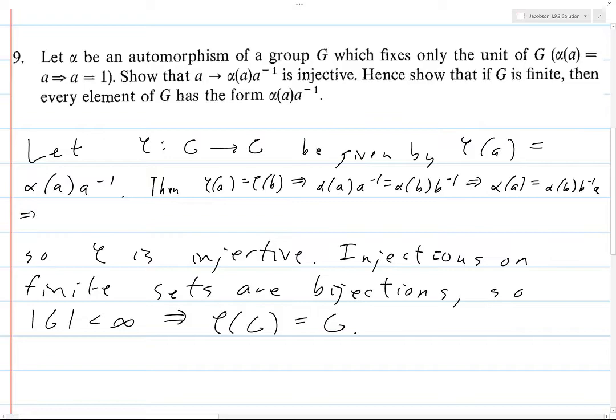Which implies that alpha of A equals alpha of B times B inverse A. But this implies that if we multiply on the left, alpha of B inverse times alpha of A equals B inverse A. It's an automorphism of a group, so it's a group homomorphism. And so then this reads alpha of B inverse A equals B inverse A.